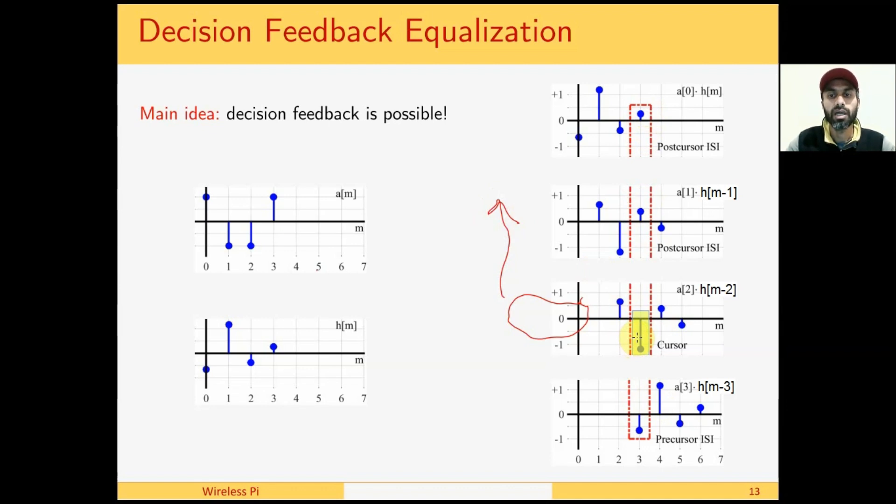This is called precursor ISI, and this is called postcursor ISI. When we call the main tap the cursor, then this ISI is the postcursor ISI because it exists after the main taps of their respective time indices. This is the precursor ISI that occurs before the actual main tap of that time index.